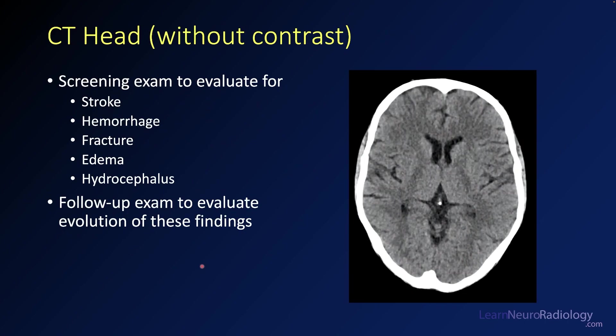CT of the head is most commonly done without contrast. This is really a screening exam — when a patient shows up to the hospital and we want to evaluate them for serious pathology of the brain, we do a CT of the head. You can see common findings of stroke and hemorrhage. If someone's been in trauma, you may be able to see a fracture, edema of the brain, or hydrocephalus. These are common uses of CT.